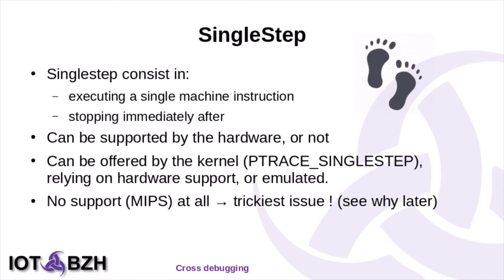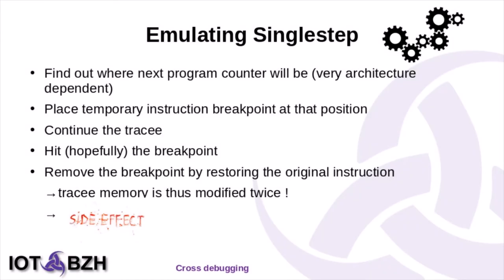Another important feature of a debugger backend is single step, which consists of executing a single machine instruction and stopping immediately after. That feature can be supported by hardware or not. The Linux kernel exposes this through the ptrace single-step call, which can rely on hardware support or be emulated by the kernel itself. When there is no support at all — as was the case on older MIPS kernels — this is the trickiest issue because you have to figure out the next program location. You have to put a temporary breakpoint on that location, resume, hit it, and remove the breakpoint, meaning the tracing memory is modified twice, which can lead to annoying side effects.